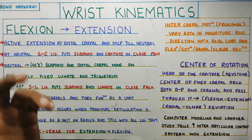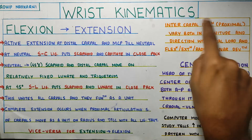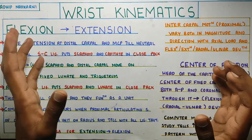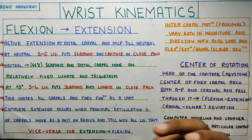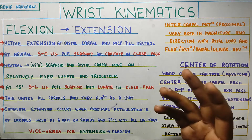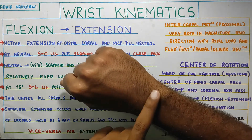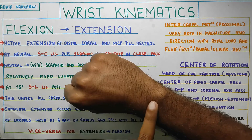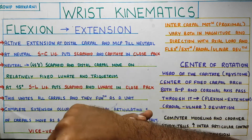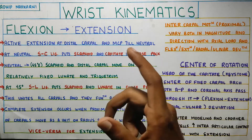Regarding flexion-extension, it is highly variable. There are different theories about how the movement occurs and what bones are moving. First, a guy called Guildford came and did some research. He said that basically all the proximal carpal bones collapse and the extension happens at the distal carpal joint - that's what Guildford said.